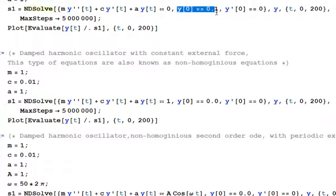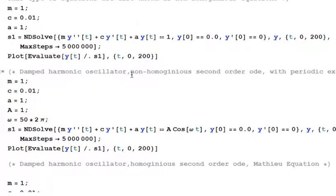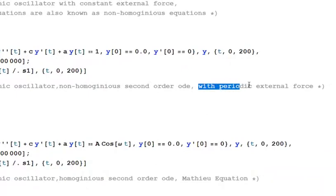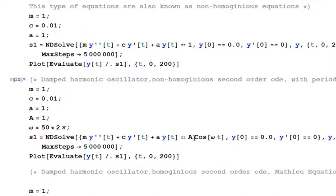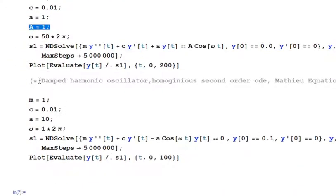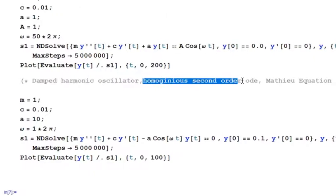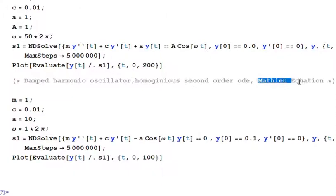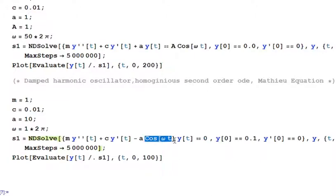In the homogeneous second-order ODE case you must provide either initial position or initial velocity. The third case is the damped harmonic oscillator as a non-homogeneous second-order ODE with periodic external force — instead of a numerical value we give a periodic value whose magnitude is denoted by A. The fourth type is the Mathieu equation, which is homogeneous (RHS is zero) but has a cos(ωt) term multiplied with the displacement, so the displacement is modulated by cos(ωt).